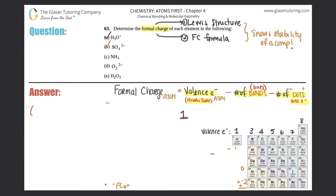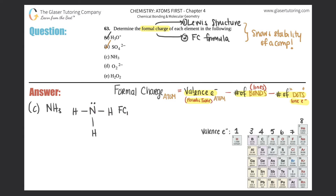Part C: NH₃. Pause if you want to try the Lewis structure yourself. The answer is nitrogen in the center bound to three hydrogens with one lone pair — two lone electrons on nitrogen. Since there's no charge in the corner, let's verify. All three hydrogens are exactly the same, so I only need to do one. I'll find formal charge for nitrogen: valence electrons = 5, minus three bonds, minus two lone electrons.